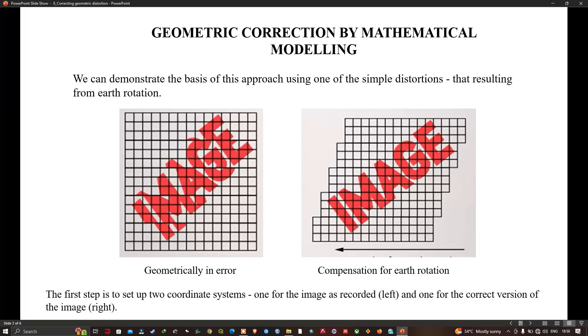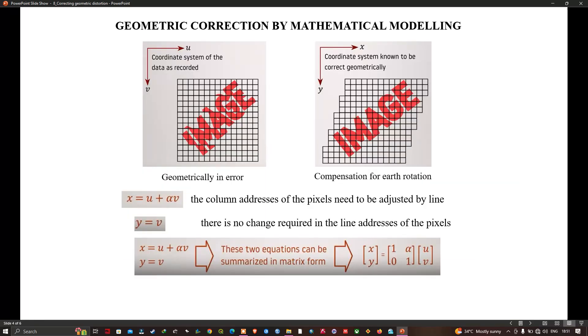The coordinate systems have their origins at the top because the platform is assumed to be moving down the page as it acquires its image. This is equivalent to a satellite in descending node. We use the coordinates u and v to describe the recorded image laid on a regular grid, and the coordinates x and y to describe the pixels in their correct positions with respect to the earth's surface.